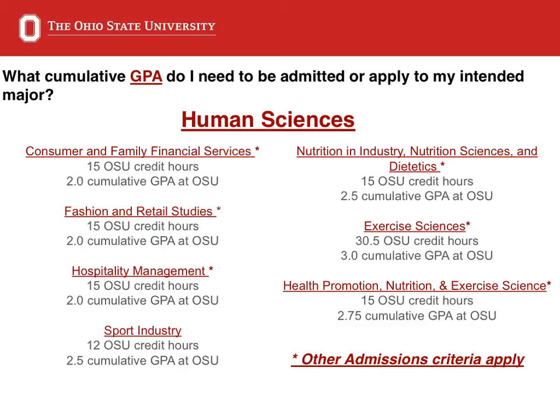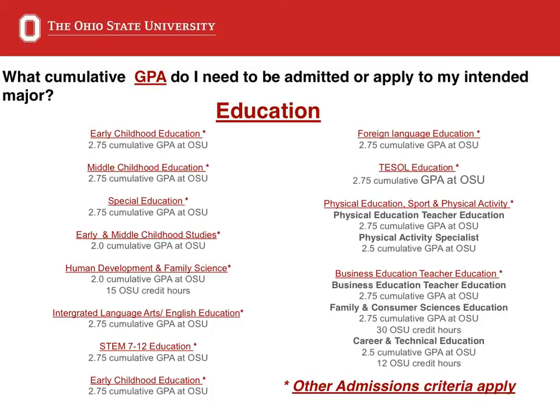Each major with an asterisk also requires further admission requirements, so make sure to plan for these with your advisor. As for the Education Cluster, all majors except for Early and Middle Childhood Studies, Physical Activity Specialists, Career and Technical Education, and Human Development and Family Sciences require a 2.75 cumulative GPA. Each of these majors requires further admissions criteria to apply and or be accepted into the major. While it is important to know what GPA you need to be accepted into a major, right now we want you to focus on the short-term goal of raising your GPA to be in good standing with the university. Other admissions criteria and applications will be part of your long-term planning process that you will continually work on with your academic advisor.